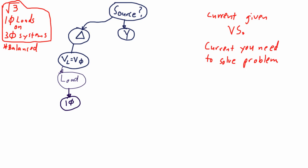If we can answer yes to that question, meaning if the load is connected line to line and you're provided with line current, then you know that the current given is the current you need to solve the problem in your final equation.